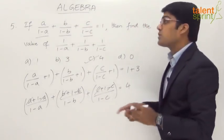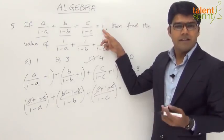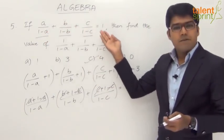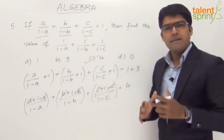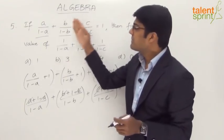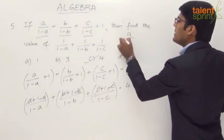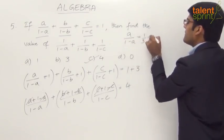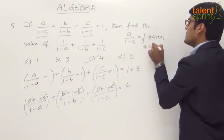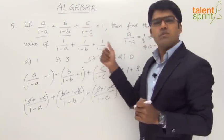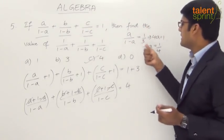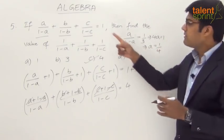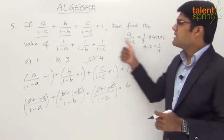If each term equals 1/3, then 1/3 + 1/3 + 1/3 = 1, which satisfies the equation. So a/(1−a) = 1/3. Cross-multiplying gives 3a = 1−a, so 4a = 1, meaning a = 1/4. Since we assumed all three terms are equal, b = 1/4 and c = 1/4 as well. With a = b = c = 1/4, the given equation is satisfied.